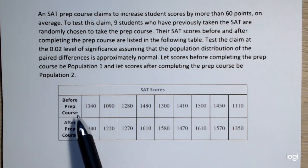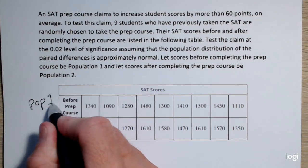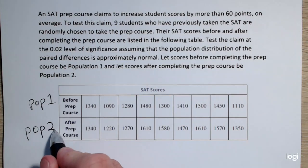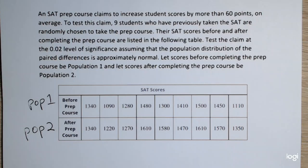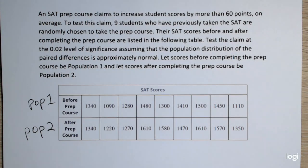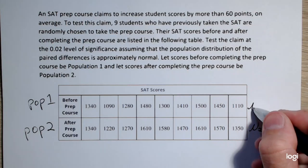So, I have the before prep course and that's population one, and the after which will be population two. The trickiest part I think for the paired t-test is to figure out the direction of the alternative, because how you subtract, if you don't keep track of that consistency, you're going to get the wrong conclusion. What we want for this problem is we want the after to be greater than the before by more than 60 points. So the overall mean for the after I can denote as mu sub 2 and the overall population mean for the before I can denote as mu sub 1.